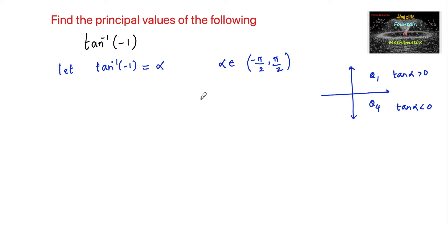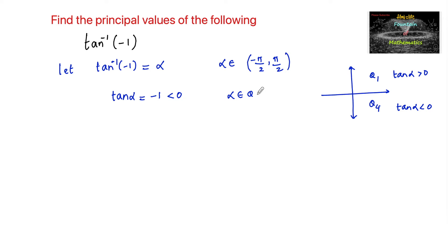So if it is a negative value, we shall consider the fourth quadrant, and here we can write tan alpha is equal to negative 1, which is less than 0. So we can say that alpha must belong to the fourth quadrant, and we know that tan of negative theta is equal to minus tan theta.